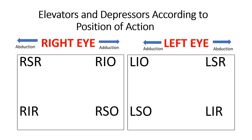If you look at this grid, the first box represents the muscles of the right eye according to their position, and the left box represents the left eye according to their position and muscles according to their position of action. When the right eye is in a position of abduction, the elevator is the right superior rectus and the depressor is the right inferior rectus. But when the right eye is in adduction, elevation is done by the right inferior oblique and depression by the right superior oblique. The same applies for the left eye.